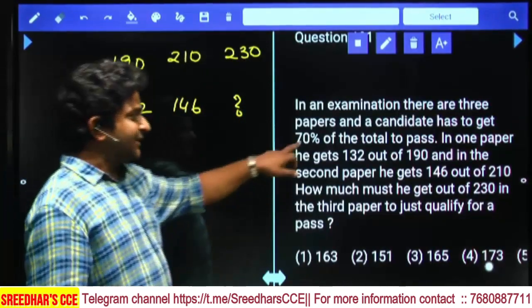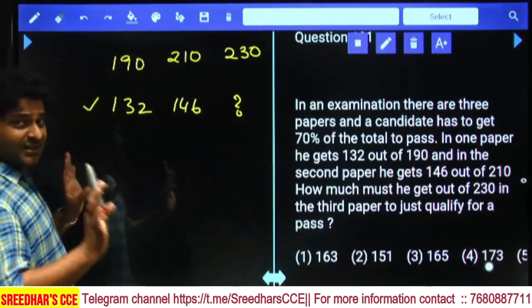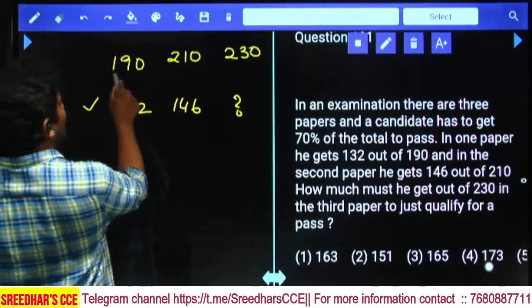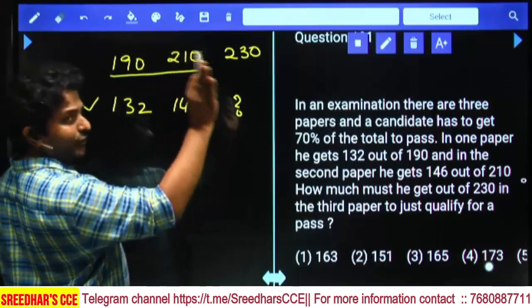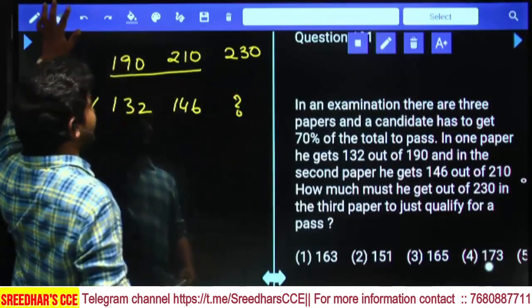Pass percentage is equal to 70%. Total how many marks are there? Let's calculate that: 190, 210, that's 400, plus 230 equals 630.